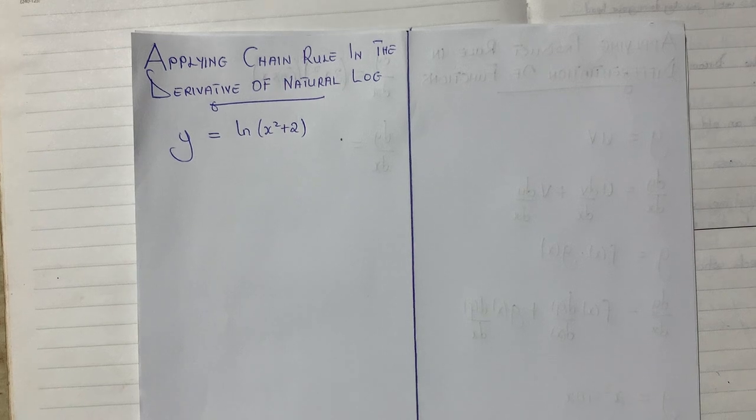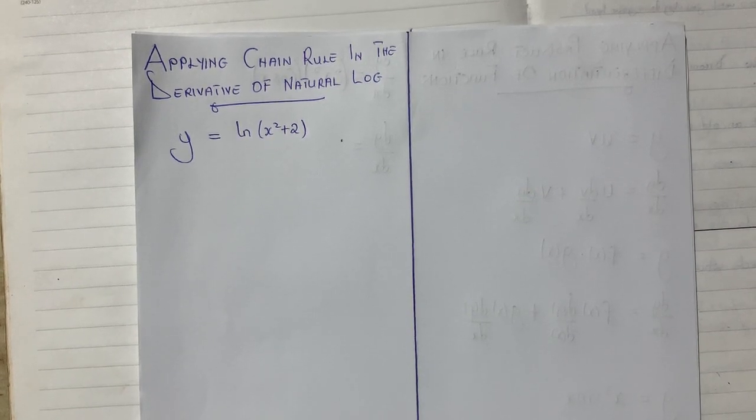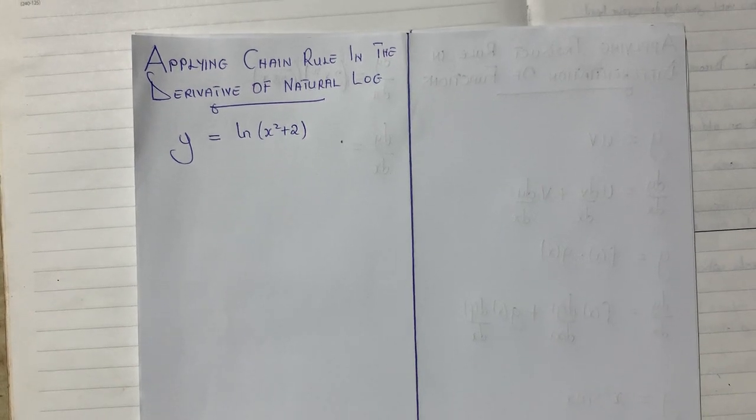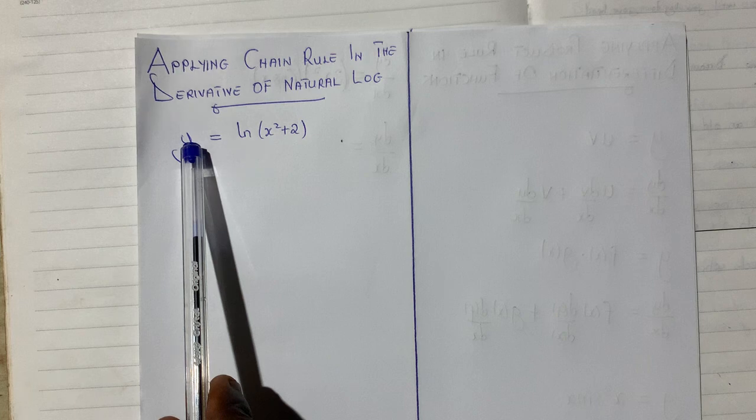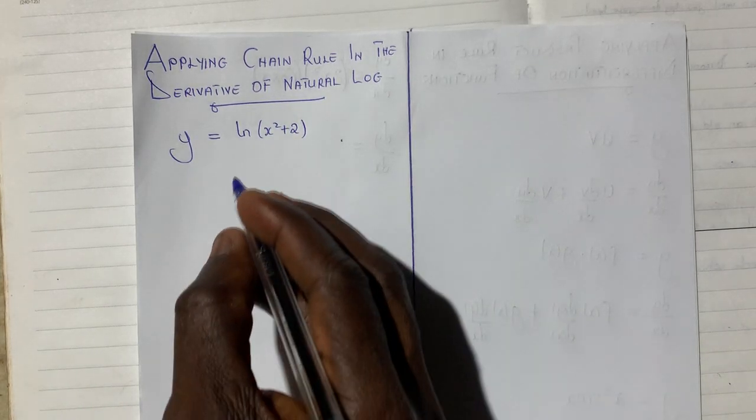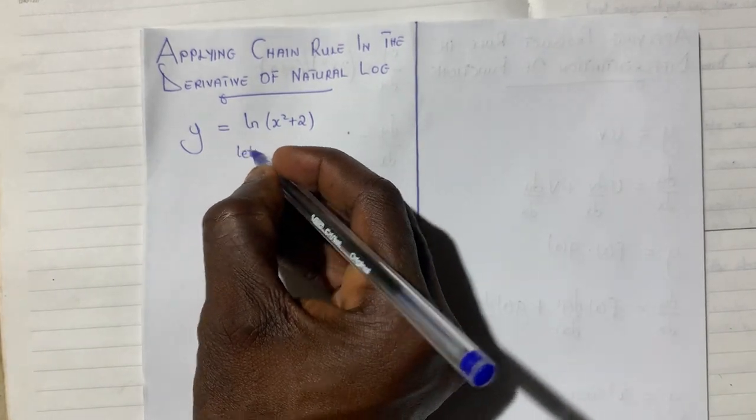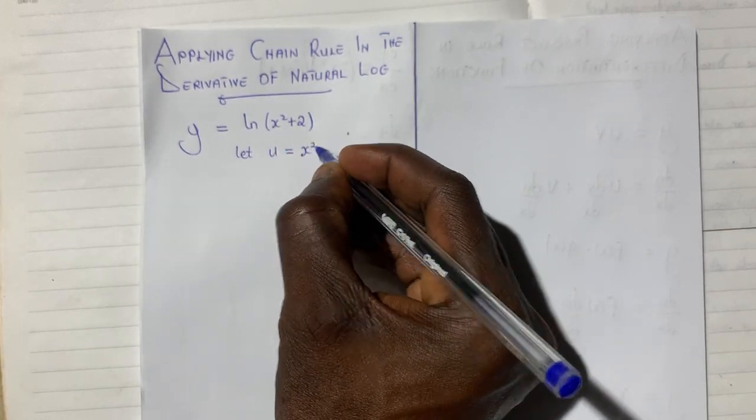We have an equation in the form y equals ln of x squared plus 2. To differentiate this, everything inside the bracket, we need to equate it to a certain variable, usually using u since we want to apply the chain rule. So we first say that let u be equal to everything in the bracket, x squared plus 2.